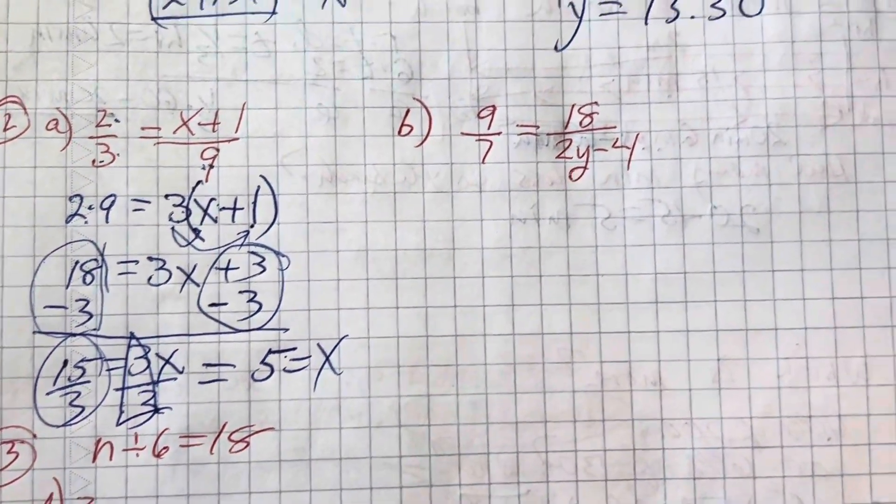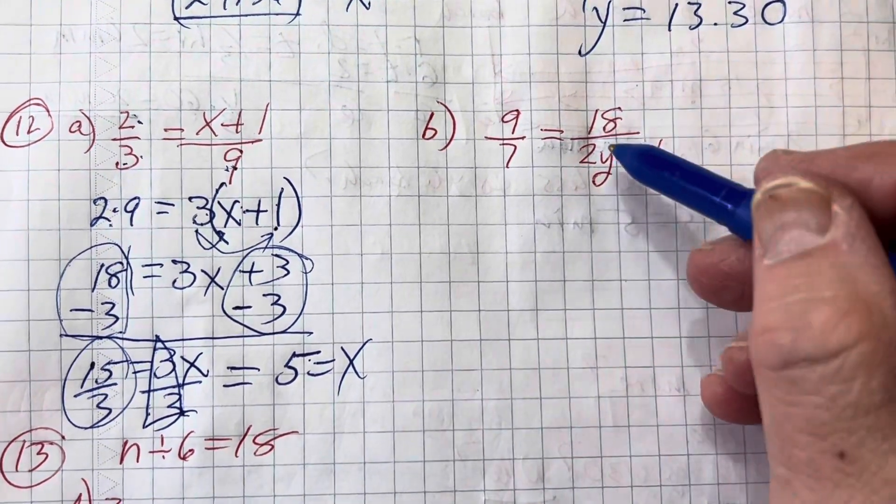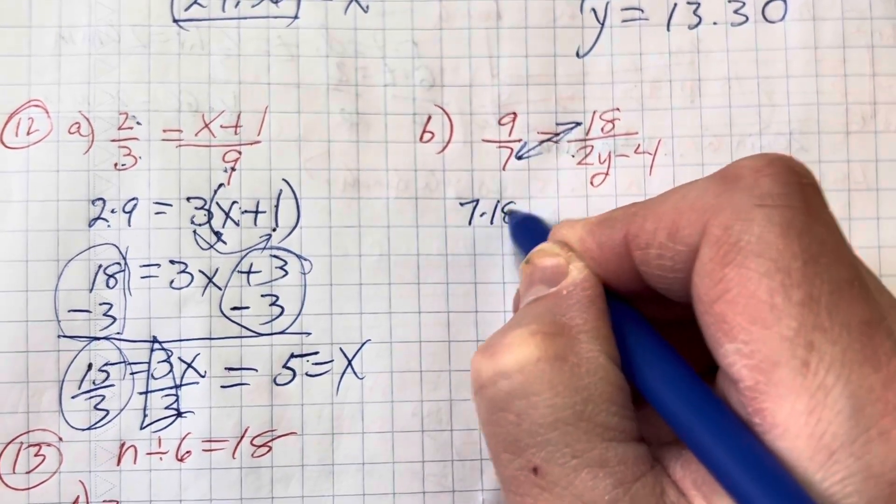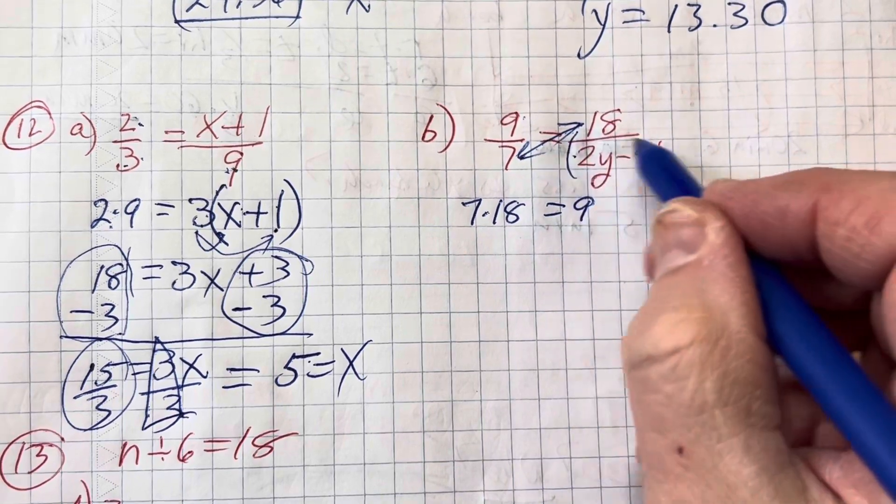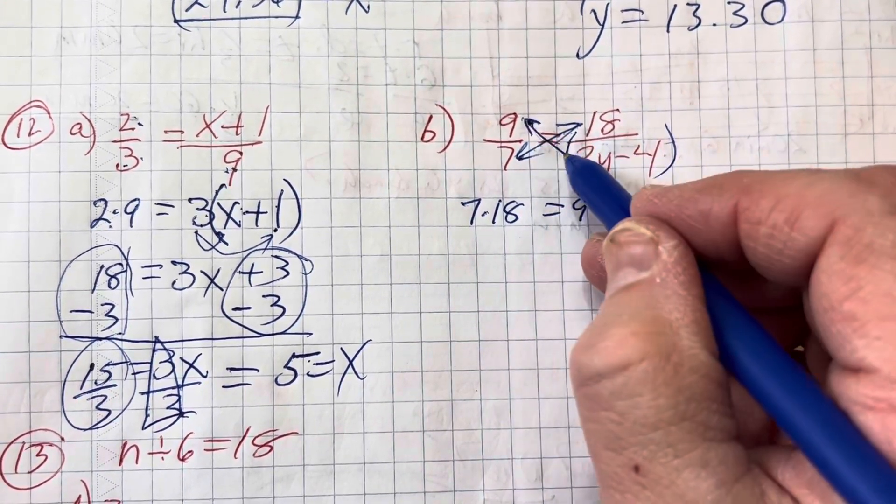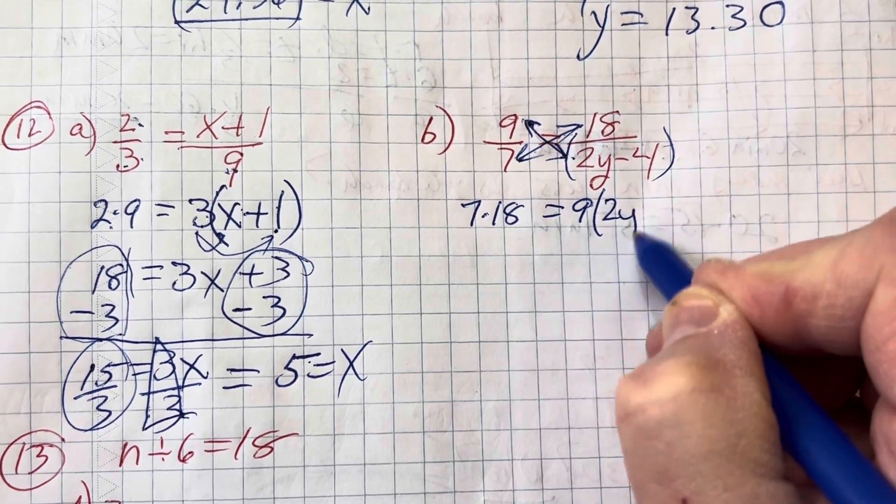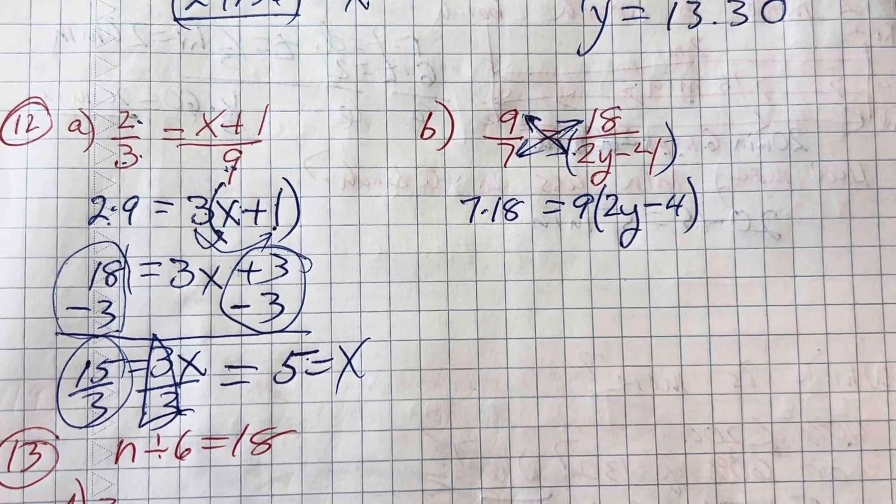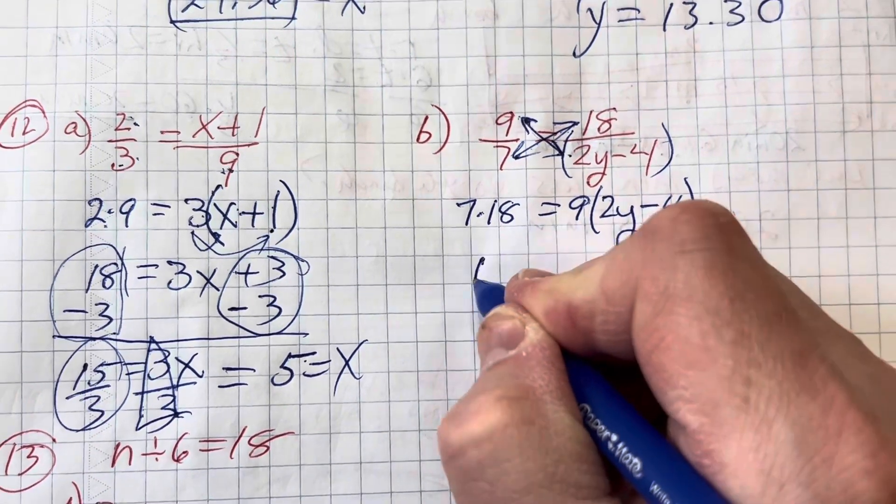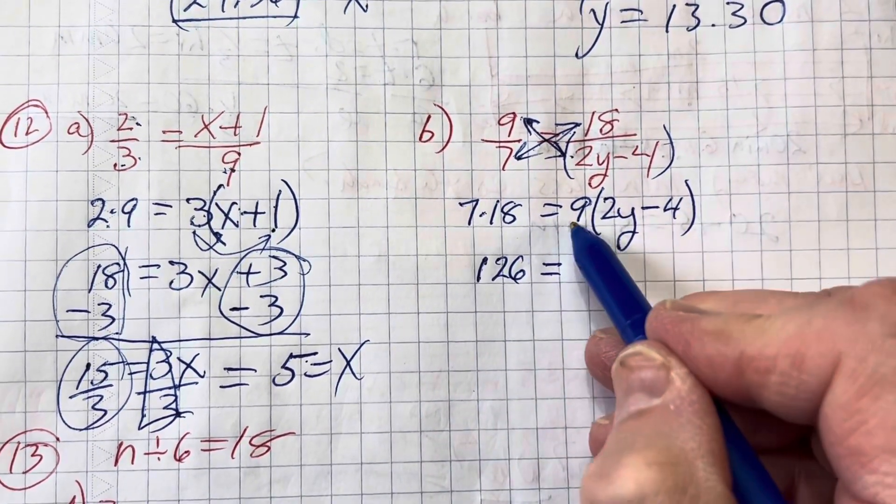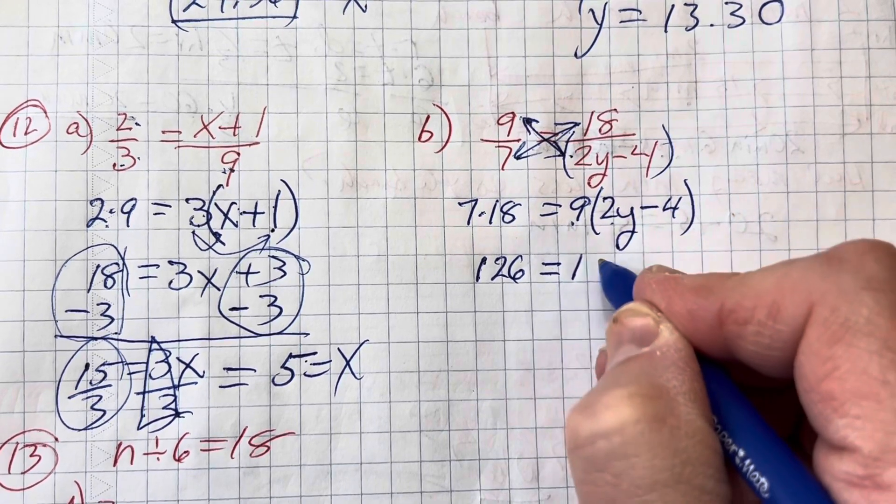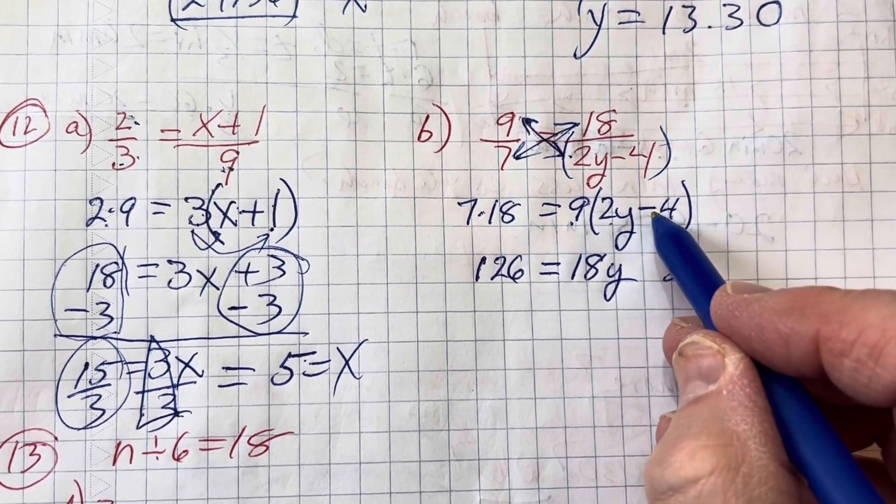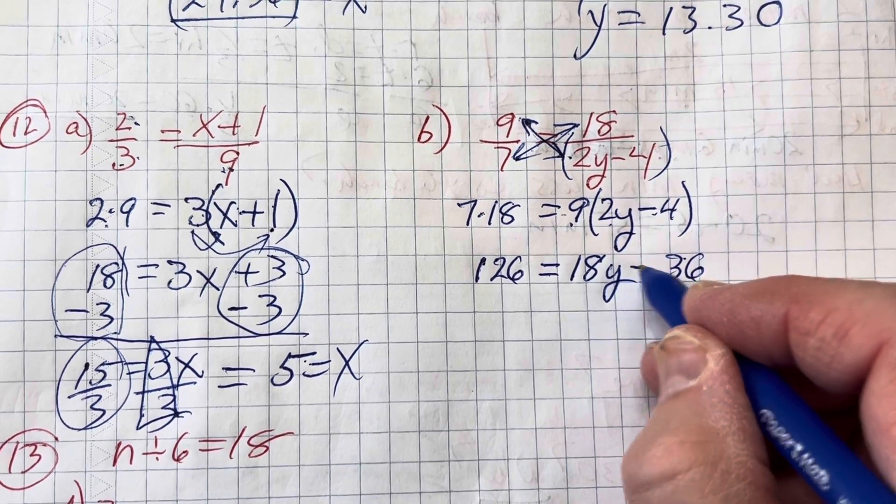There's number 12a. Number 12b. Here we are. We have the same thing. We're going to multiply these together. 7 times 18 equals 9 times this other part here. That gives me 2y minus 4. So 9 times 2y minus 4. Let's see. 7 times 18 is 126. That's set equal to the 9 times the 2y is 18y. The 9 times the 4 is 36. Am I adding or subtracting here? I'm going to subtract. Good job.